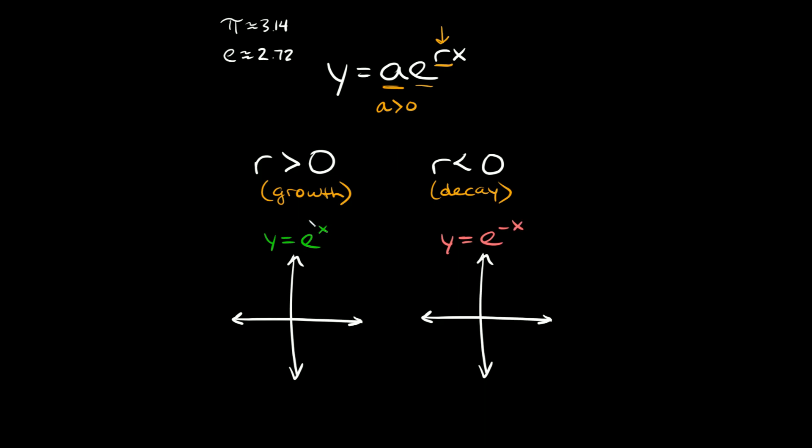Here you can see our r number is basically a positive 1, and over here it's basically a negative 1. So since r over here is positive, we know that y equals e to the x is going to look something like that. And then here, since our r number is negative, we know it's going to look something like that.